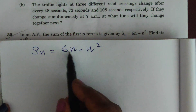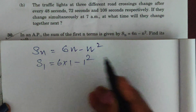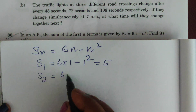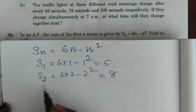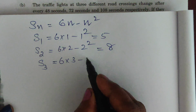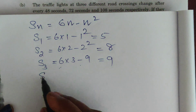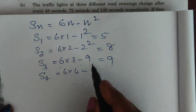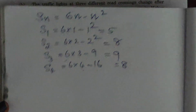Substituting natural numbers: S1 = 6×1 - 1² = 6 - 1 = 5. S2 = 6×2 - 2² = 12 - 4 = 8. S3 = 6×3 - 3² = 18 - 9 = 9. S4 = 6×4 - 4² = 24 - 16 = 8. These are our partial sums.